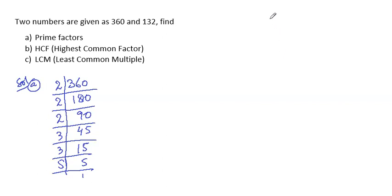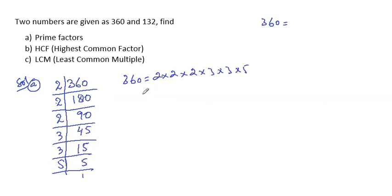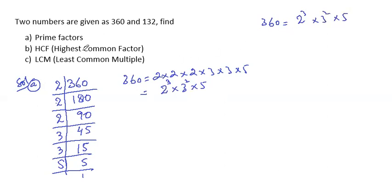So 360 can be written as 2 × 2 × 2 × 3 × 3 × 5. Since 2 is repeating three times, I write 2 to the power 3. Since 3 is multiplying two times, I write 3 to the power 2. So 360 = 2³ × 3² × 5. Now we have to find the prime factors of 132.